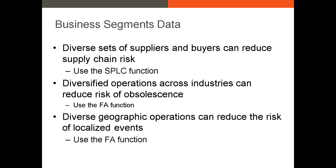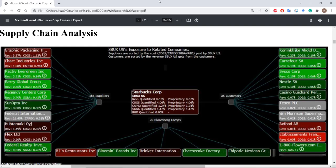Now let's talk about where you can get information on a firm's business segments. We'll start with the breakdown of a firm's suppliers and buyers. There is a function in Bloomberg — the SPLC function — which is our supply chain function. If you're analyzing a US publicly traded firm that's large enough, you'll often be able to identify several of the firm's largest suppliers and buyers. For example, if I'm looking at Starbucks, we can see this supply chain function in action.